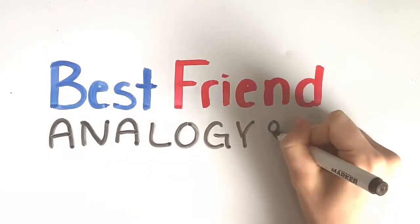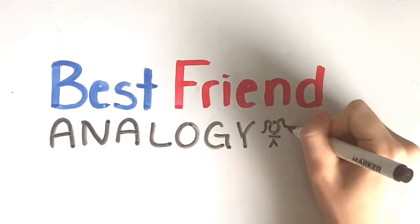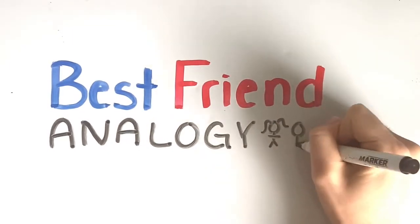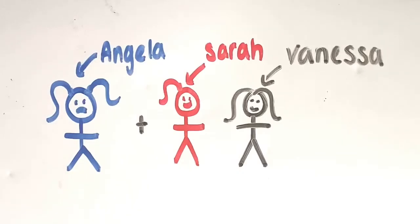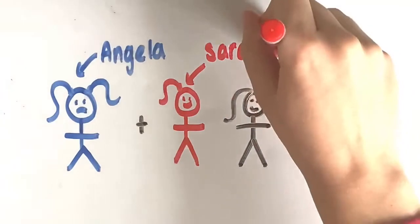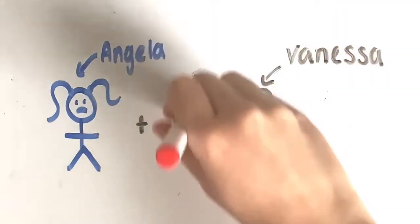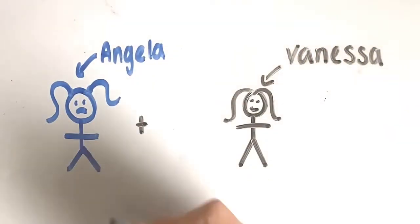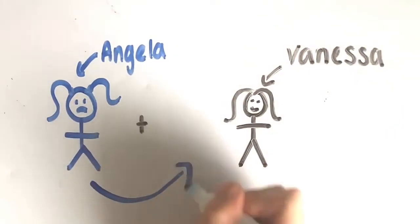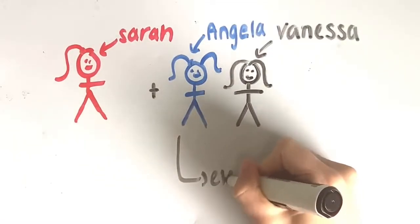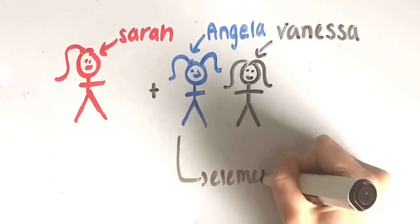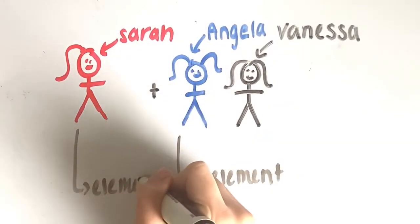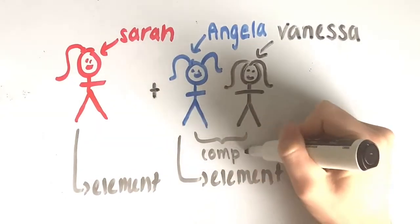An analogy to help remember this type of reaction is the best friend analogy. Angela has no friends. Sarah and Vanessa are best friends. Sarah decides she doesn't want to be friends with Vanessa anymore, but Angela wants to be Vanessa's friend. Angela represents our element because she took Sarah's place in the compound, which is their friendship.